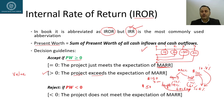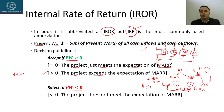So if PW is greater than zero, it means that project is actually creating certain value for the company. If PW is equal to zero, the project just meets the expectation of MARR — in other words, the project return is only enough to pay the cost of capital. If PW is less than zero, we reject that project because accepting it would result in losses, and we do not want to undertake a project that results in losses.